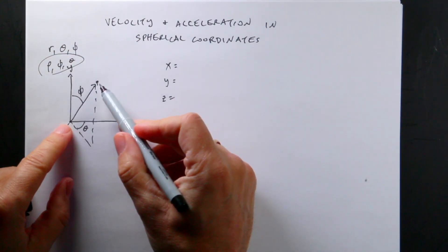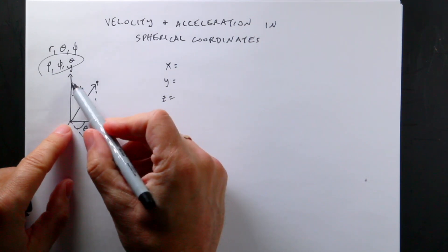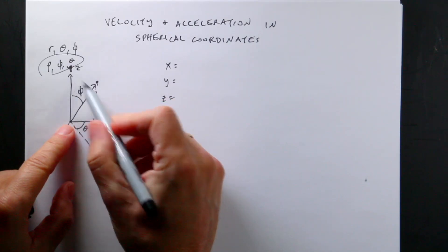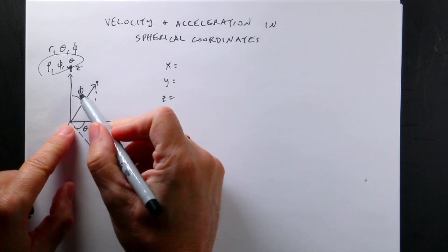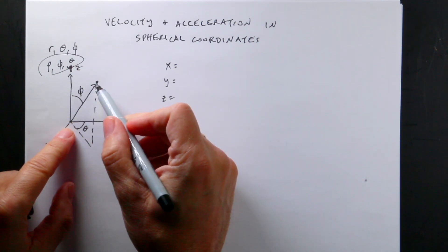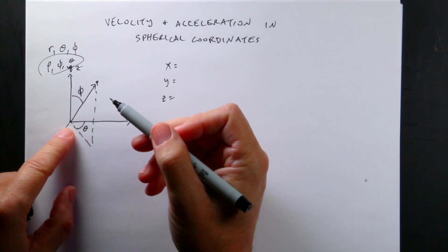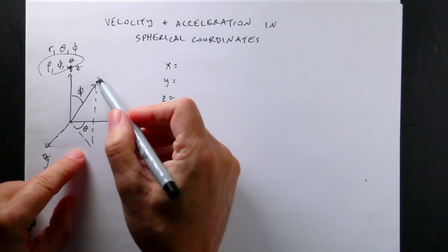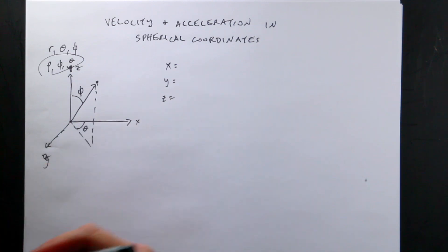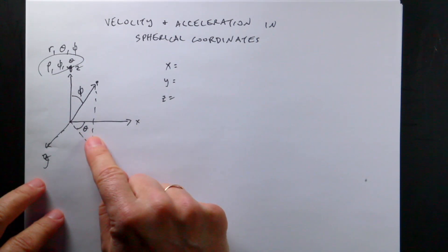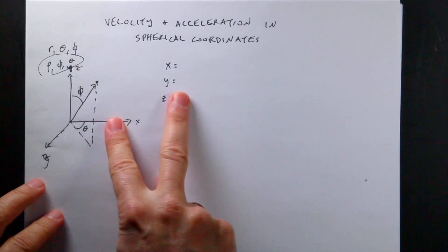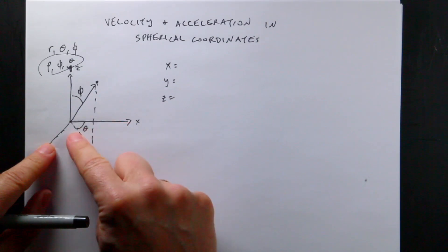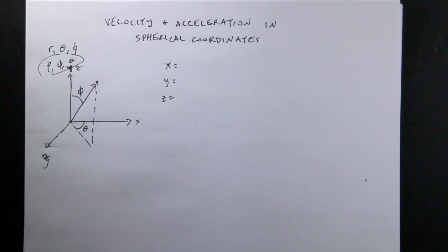The distance from the origin to the point I'm going to call r. The angle between the z-axis and the line to the point I'm going to call phi. Some people call the distance rho and this angle theta — I don't like that, but if that makes you happy, you do you. If you project the point down into the xy plane, the angle from the x-axis is theta. I prefer putting theta in the xy plane because it matches polar coordinates, where I have r and the same angle theta.